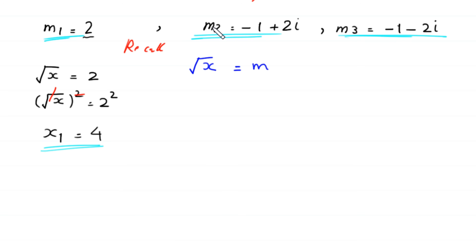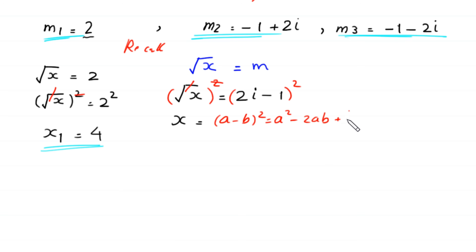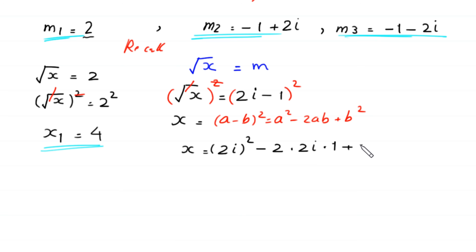Now, in this equation, we put the value of m₂: negative 1 plus 2i. So square root of x is equal to 2i minus 1. From here, we take the square of both sides. The square cancels with the square root, and x will be equal to — by using the algebraic identity (a minus b) squared equals a squared minus 2ab plus b squared — this (2i minus 1) squared equals (2i) squared minus 2 times 2i times 1 plus 1 squared.